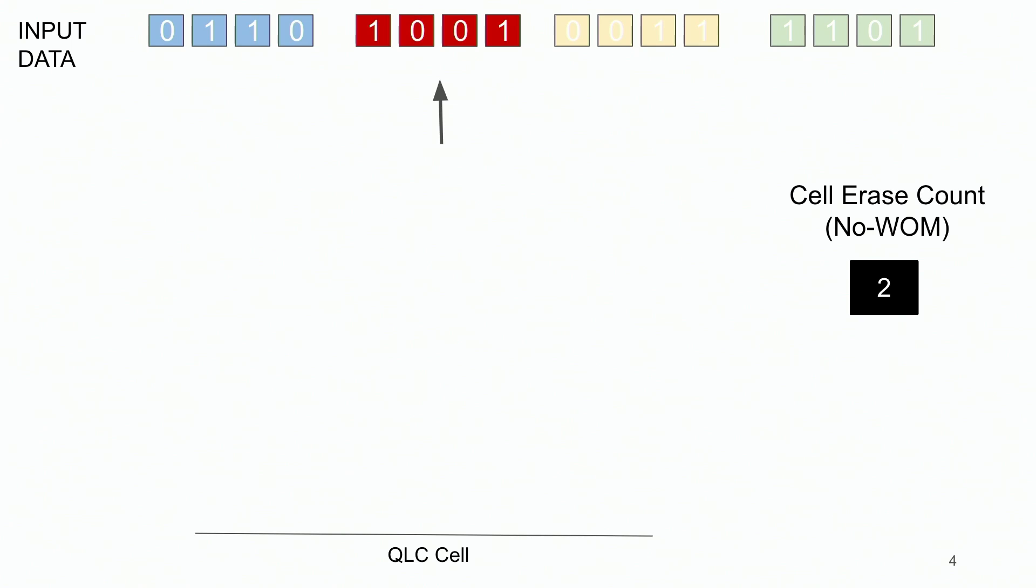Next, before the second word write to the QLC cell, there needs to be another erase operation. Similarly, for the third and the fourth write, there are a total of four erase operations on the underlying QLC cell.